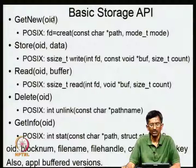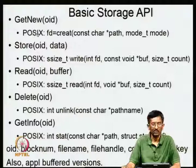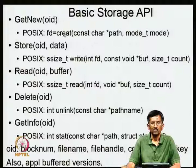Sometime later you might want to delete it, or sometimes you want to get the metadata of the object itself. At some abstract level, these are some of the important ways to interact with a storage system — the ability to create objects, store, read, delete, and get information on the object. In Unix, there is something called POSIX, a portable model in Unix systems, and there is a corresponding operation for each of these functionalities.